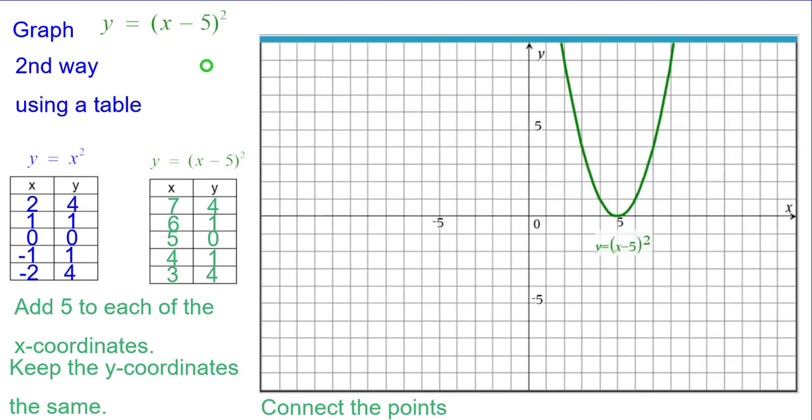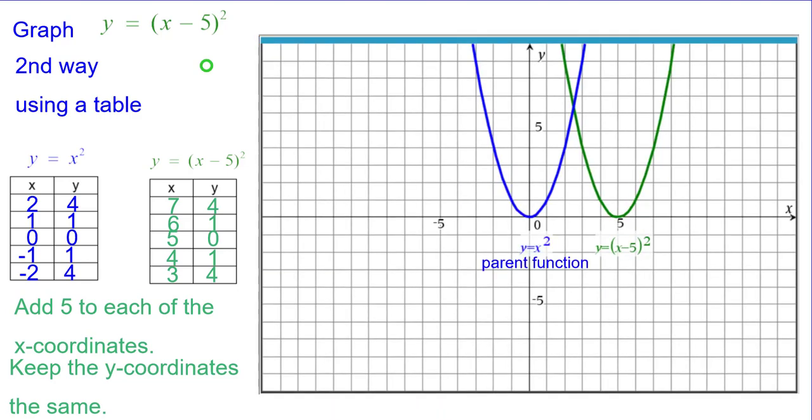So we'll connect the points. And there's our y equals the quantity of x minus 5 squared. And compare it to the parent function. As you can see, the graph of y equals the quantity of x minus 5 squared is a horizontal shift to the right of 5 units of the parent function, y equals x squared.